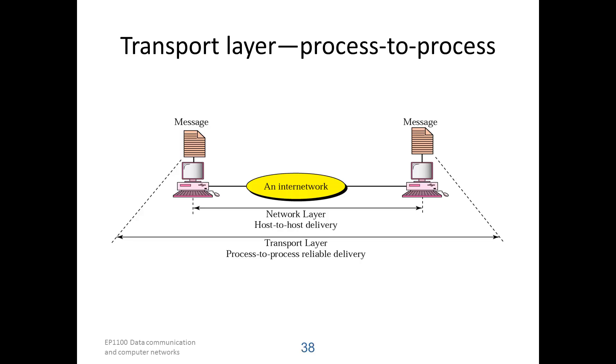There is also error control, so that the receiver detects whether there is error in the messages, or whether data is missing, and can ask for retransmission from the sender. There is also traffic control to resolve any congestion that might have occurred in the network.